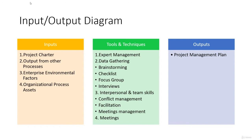Just as for the last activity the business case was an input for the project charter, here we have the project charter as an input, along with environmental factors, organizational process assets, and other outputs. Other outputs could be any document relevant to the project that was produced during earlier stages. Sometimes there may not be anything — if you only have a project charter document, that's okay.